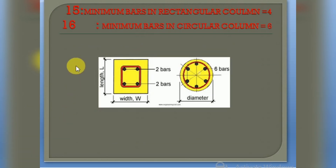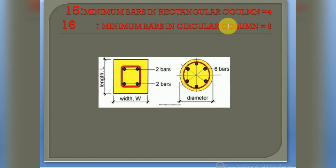The 15th and 16th points are merged. Minimum bars in a rectangular column are four — in case of a rectangular column we have to provide a minimum of four bars at the four corners. Minimum bars in a circular column are six — here I have shown you the circular column, where we have to provide a minimum of six bars at equal distances. We cannot provide less than six bars in circular columns.